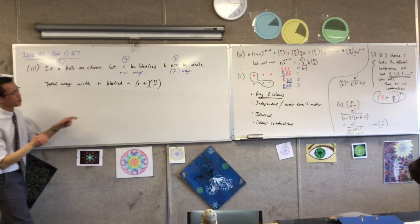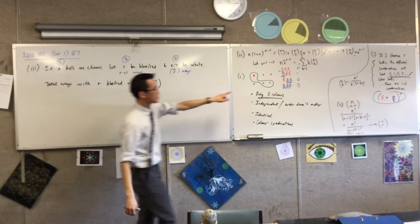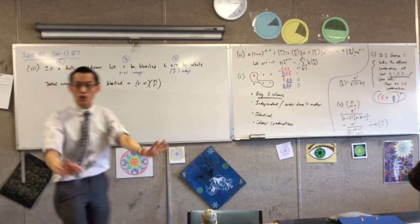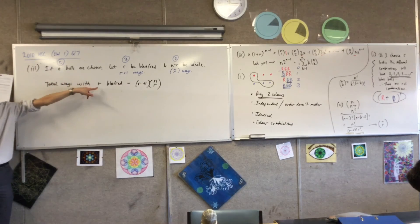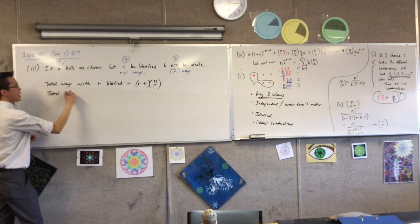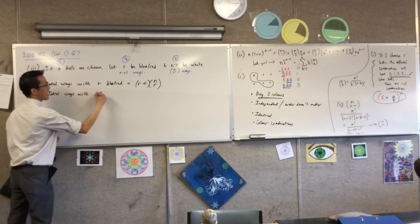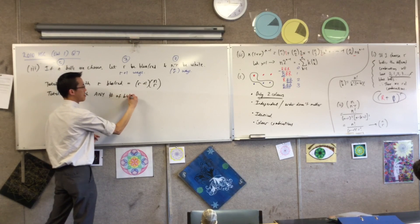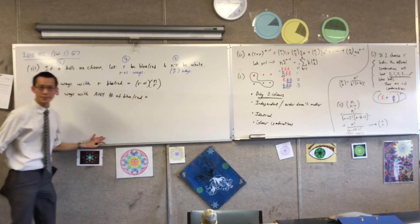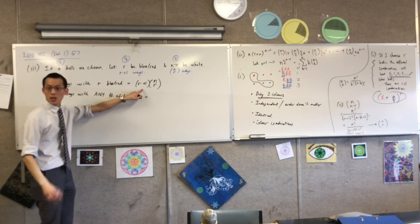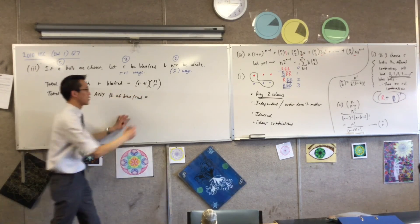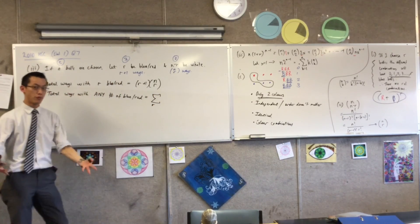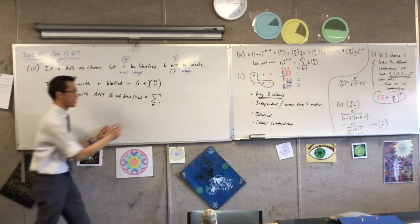So the way I do, it's called sigma notation. You see this? So what I'm going to do is I've got, this is the number of ways with blue and red. So now I want the total ways with any number of blue or red. So I need to add up a whole bunch of these with different values of r.